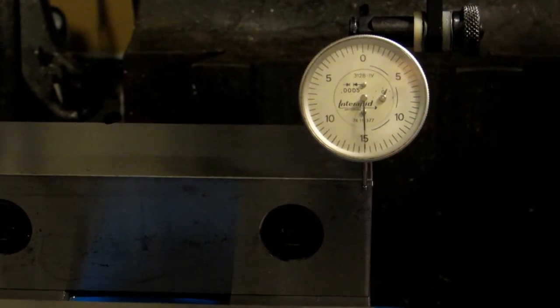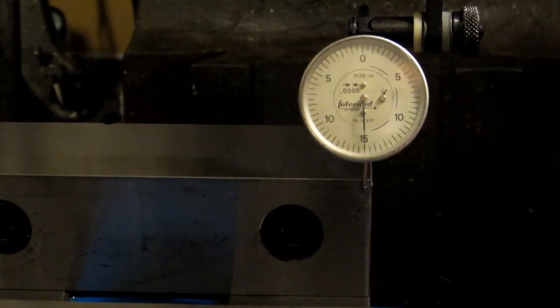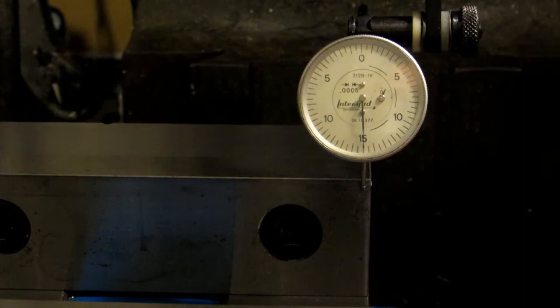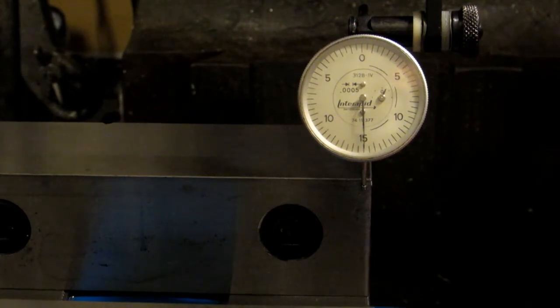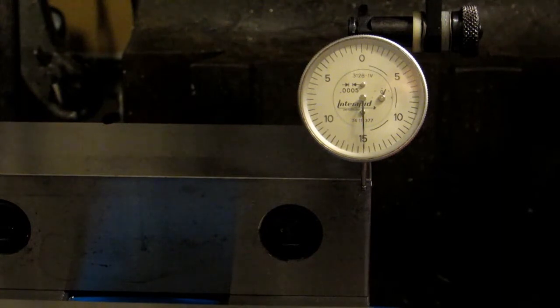I'm going to make a quick note here. If you have a power feed on your x-axis, don't use it to move back and forth across the vise. It has a tendency to make the indicator twitch and then you lose where your zero is.